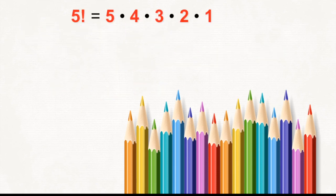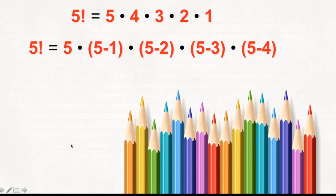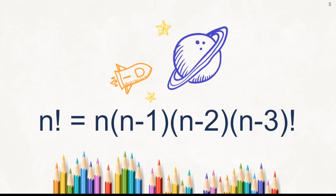To illustrate this further, let's look again at this example. 5 factorial is equal to 5 times 4 times 3 times 2 times 1. This can also be written as 5 times (5 minus 1), which is 4, and then 3, which is 5 minus 2. 2 is 5 minus 3, and 1 is 5 minus 4. When you look at the pattern, we come up with this generalization. So n factorial is equal to n times (n minus 1) times (n minus 2) times (n minus 3) factorial. Notice that there's still this factorial symbol because it goes on and on.